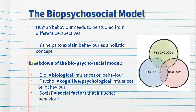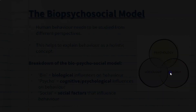Just to recap the breakdown of the biopsychosocial model: the bio refers to biological influences on behaviour, the psycho refers to cognitive or psychological influences on behaviour, and the social refers to the social factors that influence behaviour.